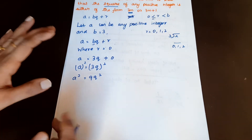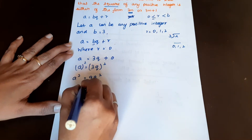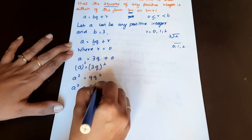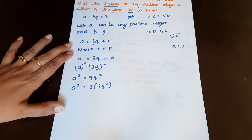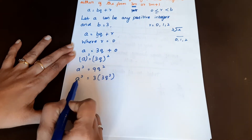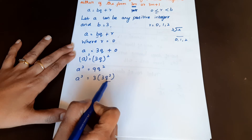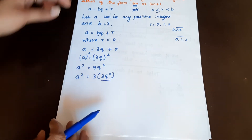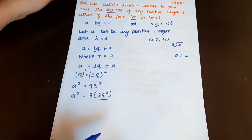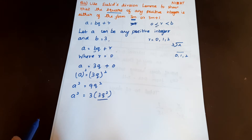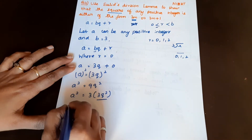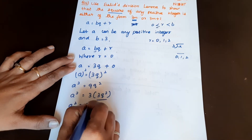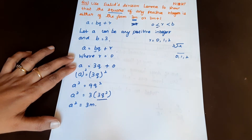3 is a factor, so 3 is common. A squared is equal to 3 bracket 3q squared. So if a squared equals 3(3q²), we let M equal 3q squared, and therefore a squared is equal to 3M.